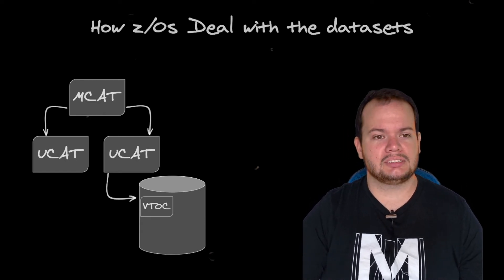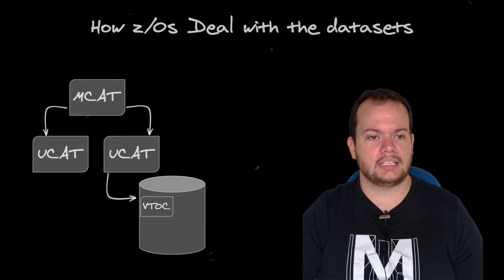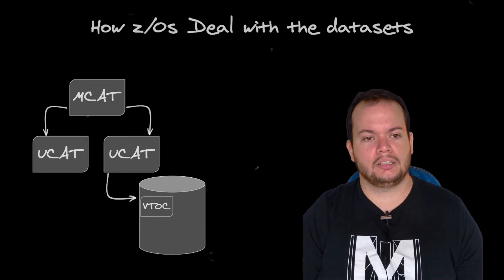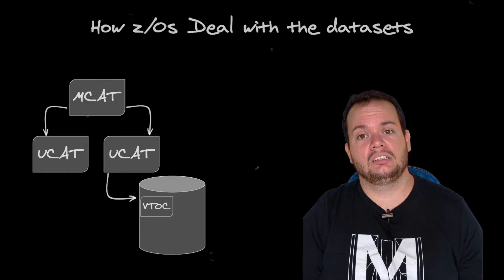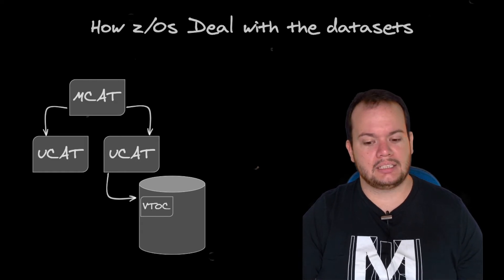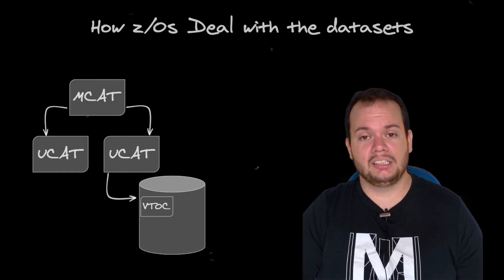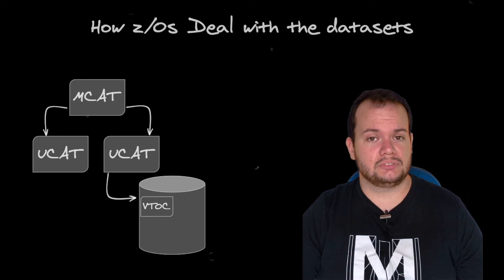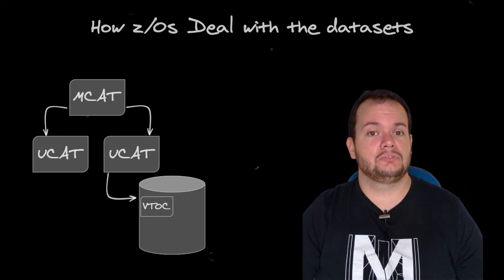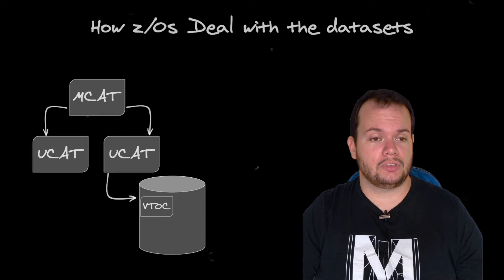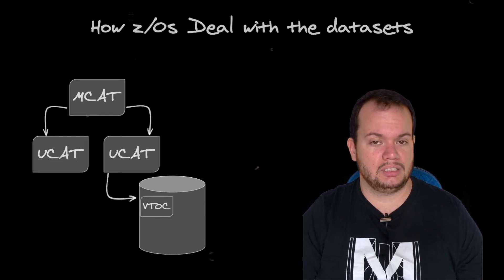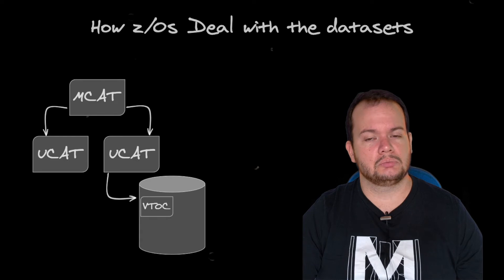The UCAT has pointers for these disks. When we go to the disks, there are many other datasets inside. One dataset may be in one track, another in a different one. So at the beginning of each of these volumes, there is another structure called a VTOC — Virtual Table of Contents — and there you are pointed to exactly where inside the disk your data is.